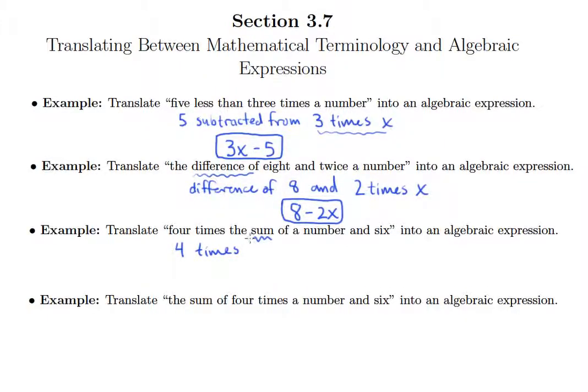Anytime there's a set of instructions that come after some other command, what you want to do is put in parentheses what you're going to take the sum of in this case. We need to take the sum before we can take 4 times what comes next.